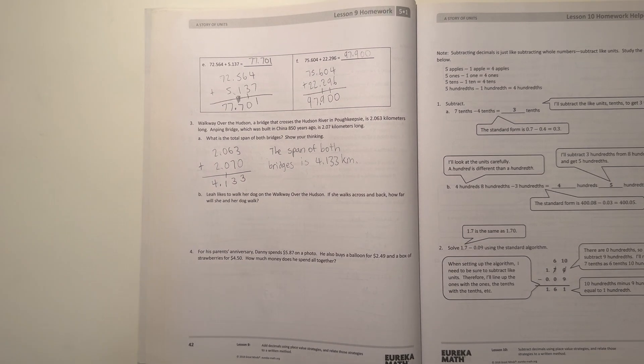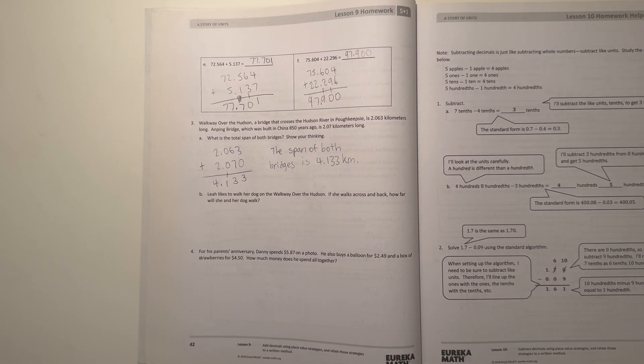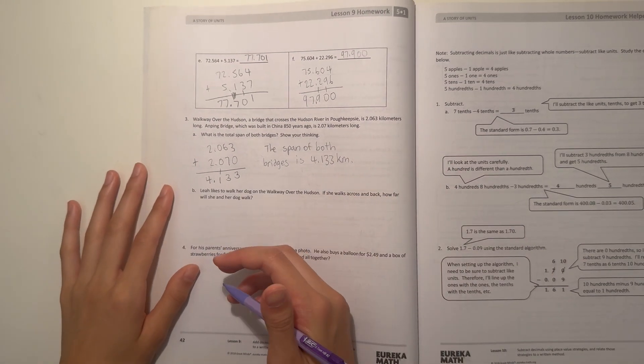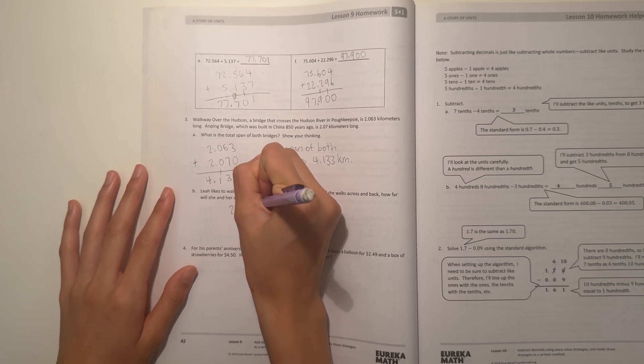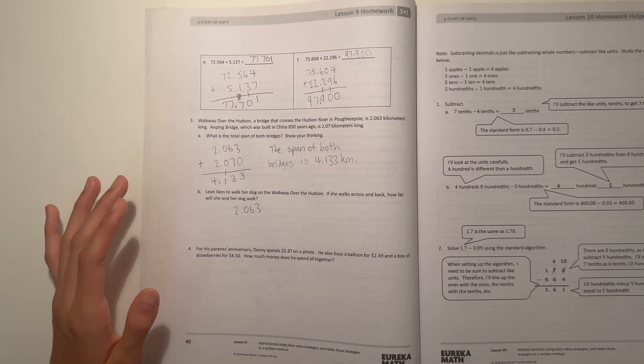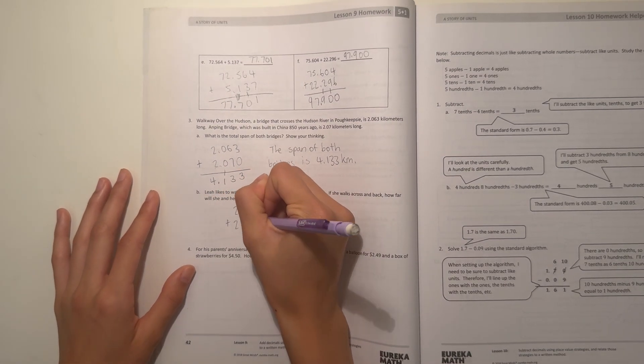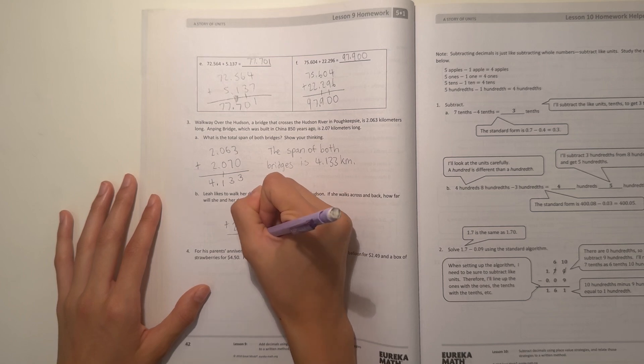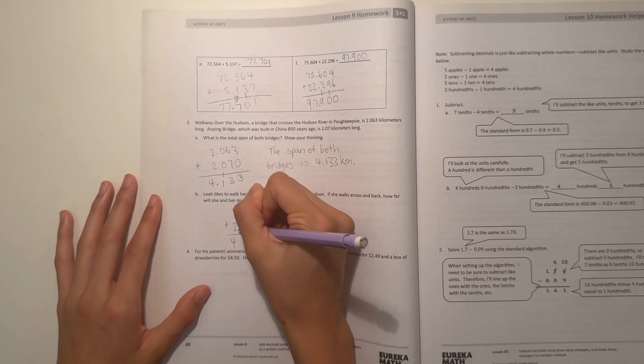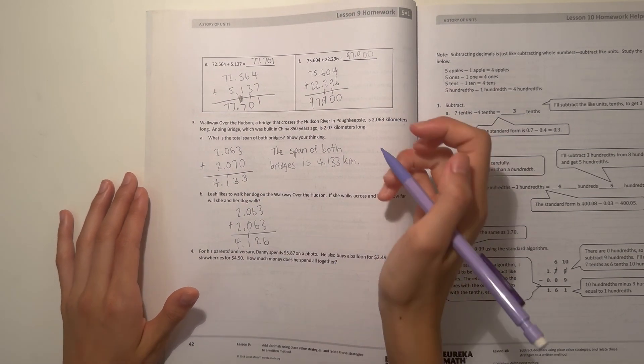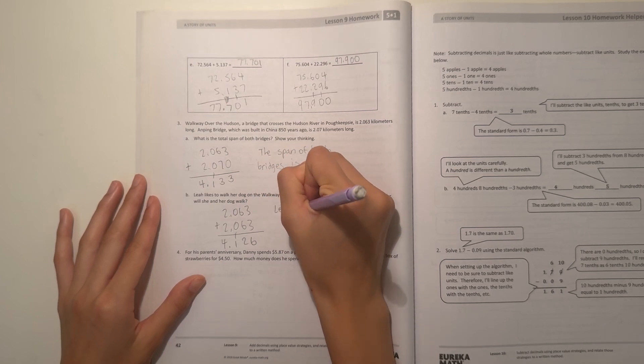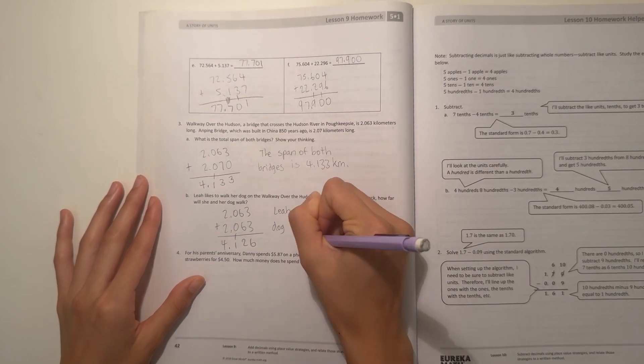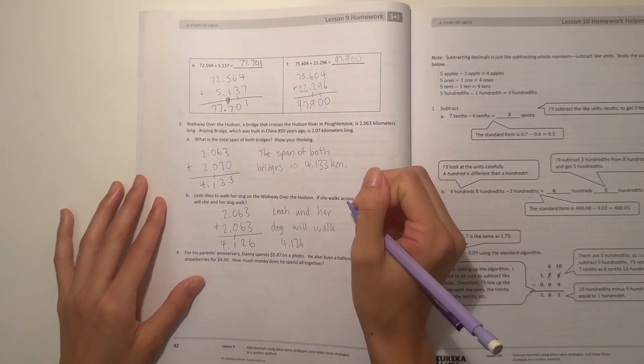Alright, and B. Leah likes to walk her dog on the walkway over the Hudson. If she walks across and back, how far will she and her dog walk? So across over the Hudson would be 2.063 kilometers long. But she's walking across and back. So that means she's walking the distance twice. So we do the same number plus the same number. So it's 3 plus 3 is 6, 6 plus 6 is 12, 0 plus 1 is 1, and 2 plus 2 is 4. Move the decimal point down. So her answer is 4.126. So that means Leah and her dog will walk 4.126 kilometers.